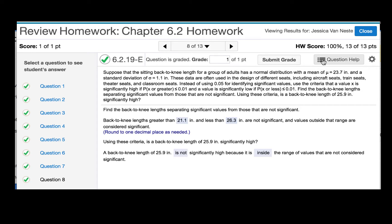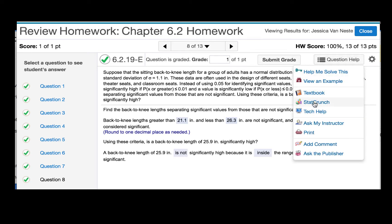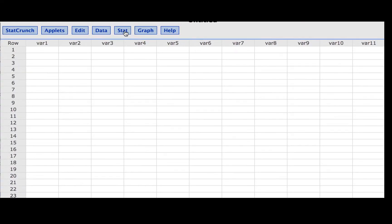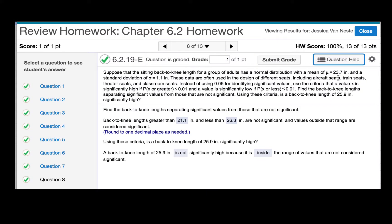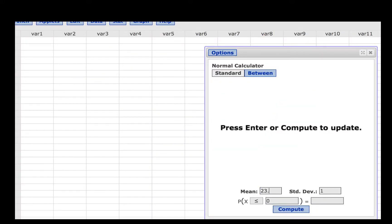We will click question help and then StatCrunch. Then we'll click stat, calculators, normal. We are told that the mean is 23.7 inches and the standard deviation is 1.1. So we will enter 23.7 for the mean and 1.1 for the standard deviation.